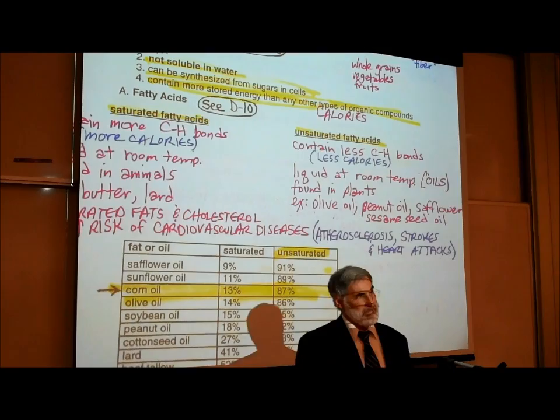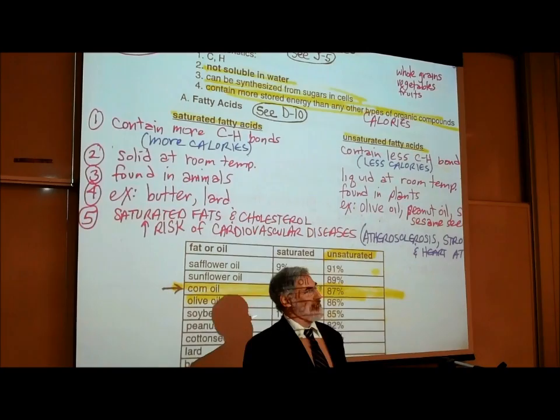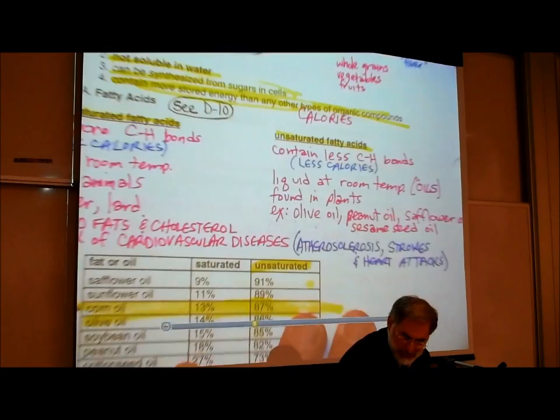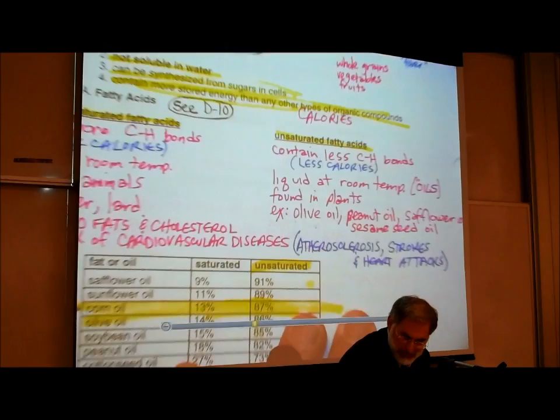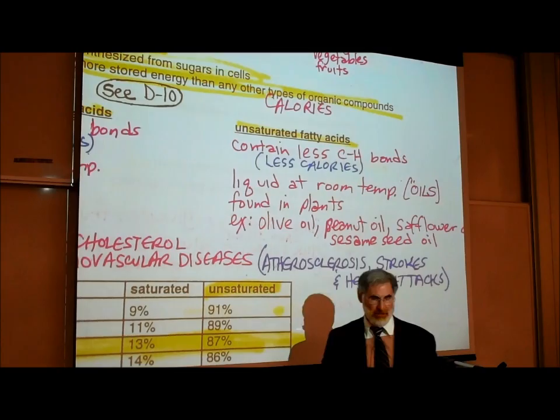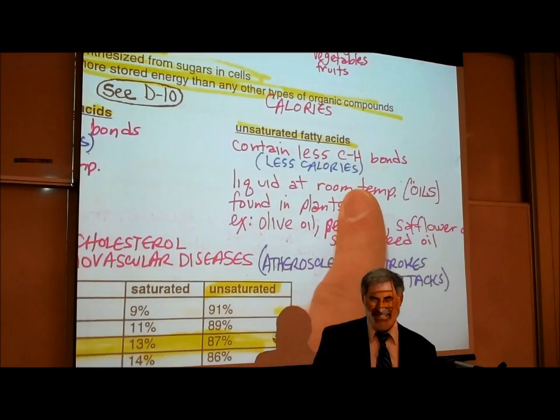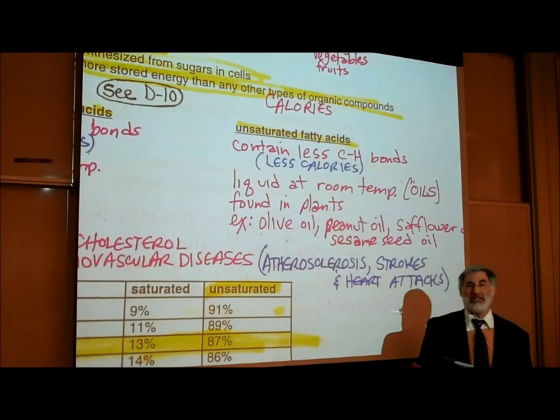These are the leading causes of death, so we want to try to avoid eating foods high in saturated fats and cholesterol. What about unsaturated fats? Unsaturated fats contain less carbon-hydrogen bonds — they were missing hydrogen atoms, not fully saturated with hydrogen. Having fewer carbon-hydrogen bonds means they contain less calories of energy, so one immediate advantage of unsaturated fats is that they're lower in calories.